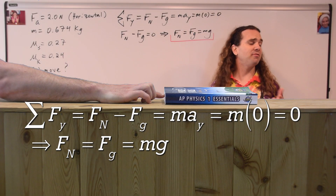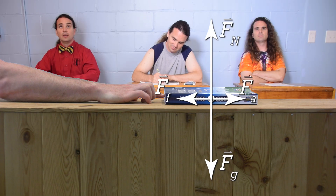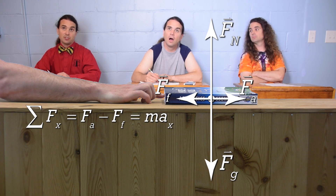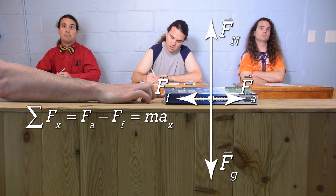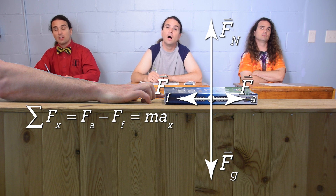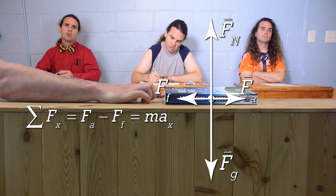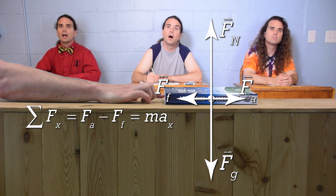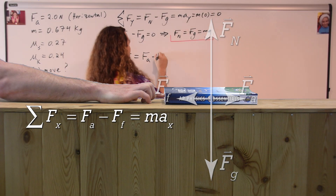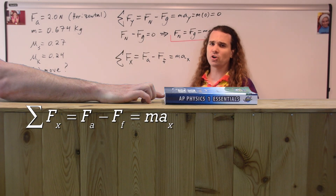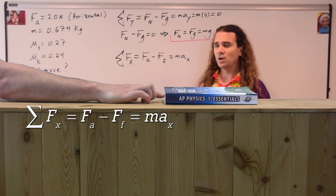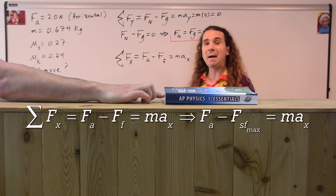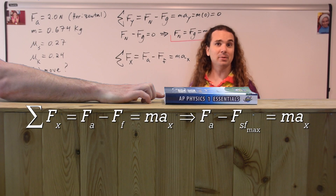Billy, could you please do step five? The net force in the x direction equals the force applied minus the force of friction, which then equals mass times acceleration in the x direction. However, we don't know what type of friction and we don't know the acceleration. At this point, we are trying to determine if the book moves or not, so let's substitute in the equation for the maximum force of static friction and see what happens.